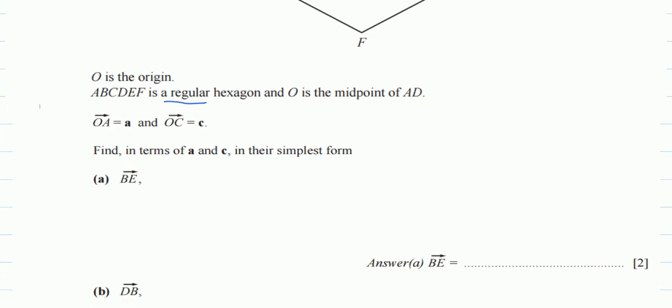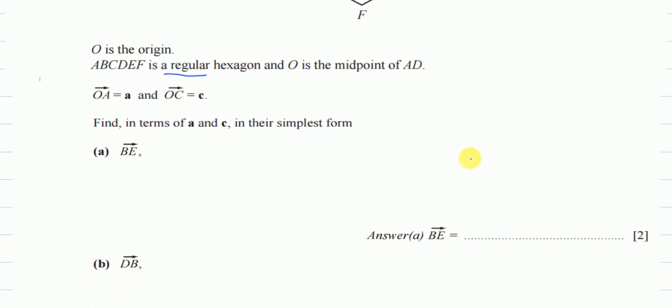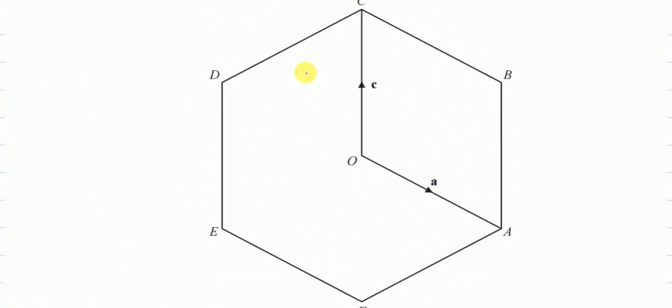Anyway, for part a, the only parts we can go is a and c. So we have to find our answer in terms of a and in terms of c. Let's start with part a. We have to start from b and end at e. So from b to e, so I will start from here, and I have to somehow end over here. Let's start now.